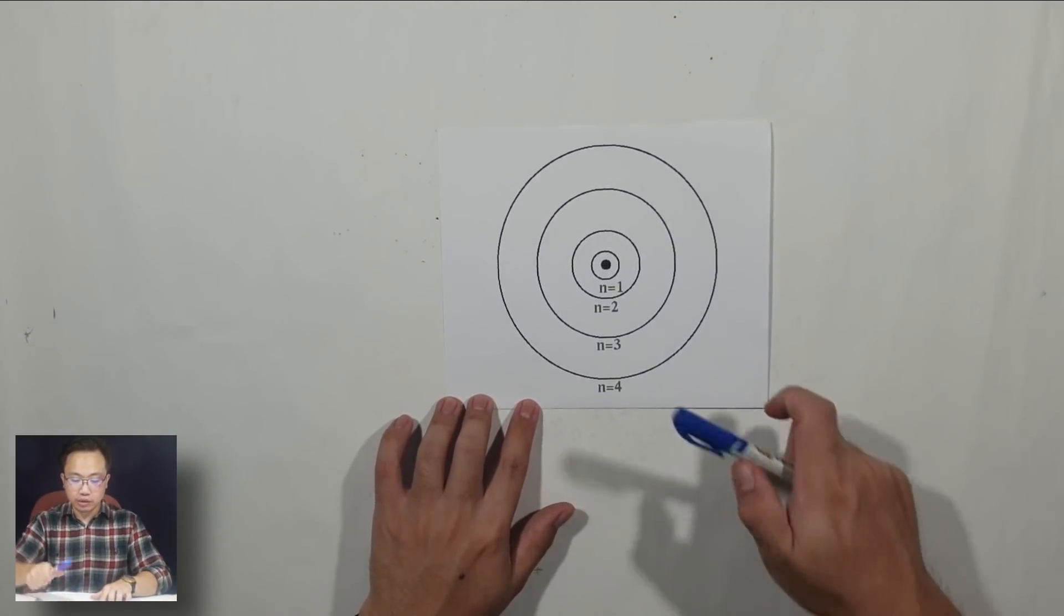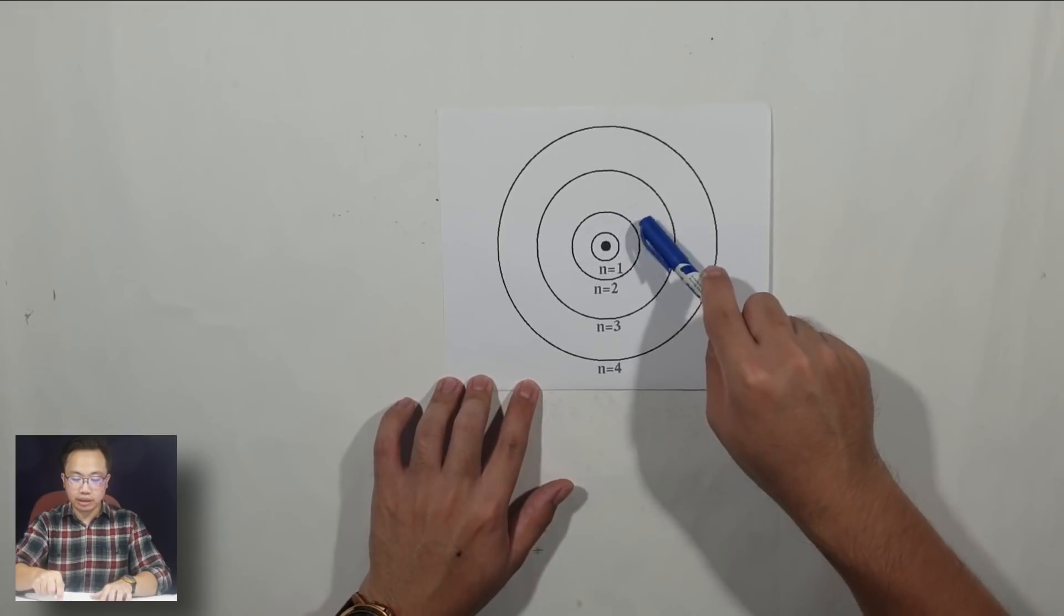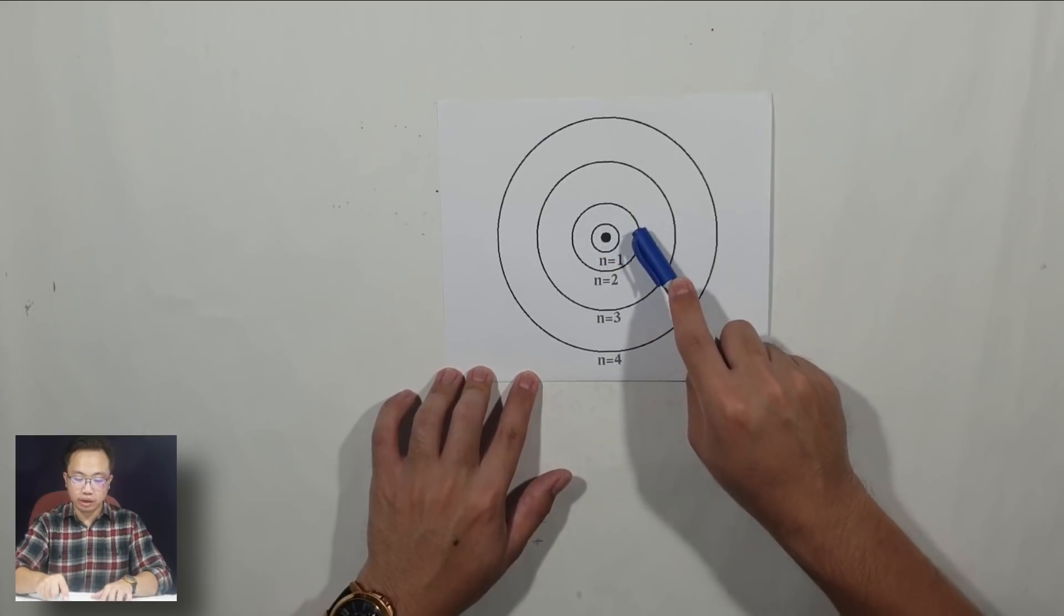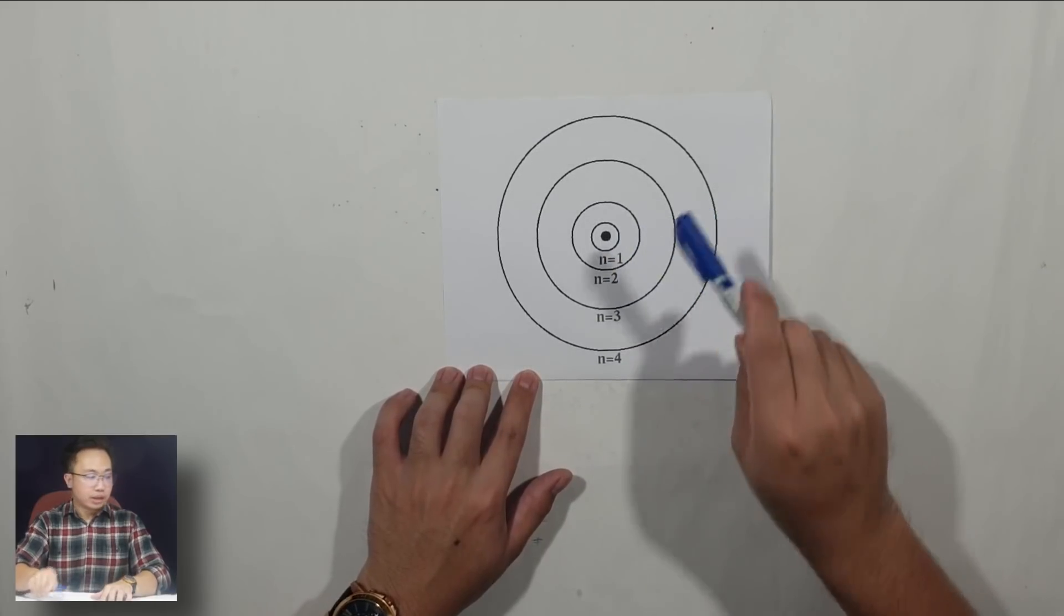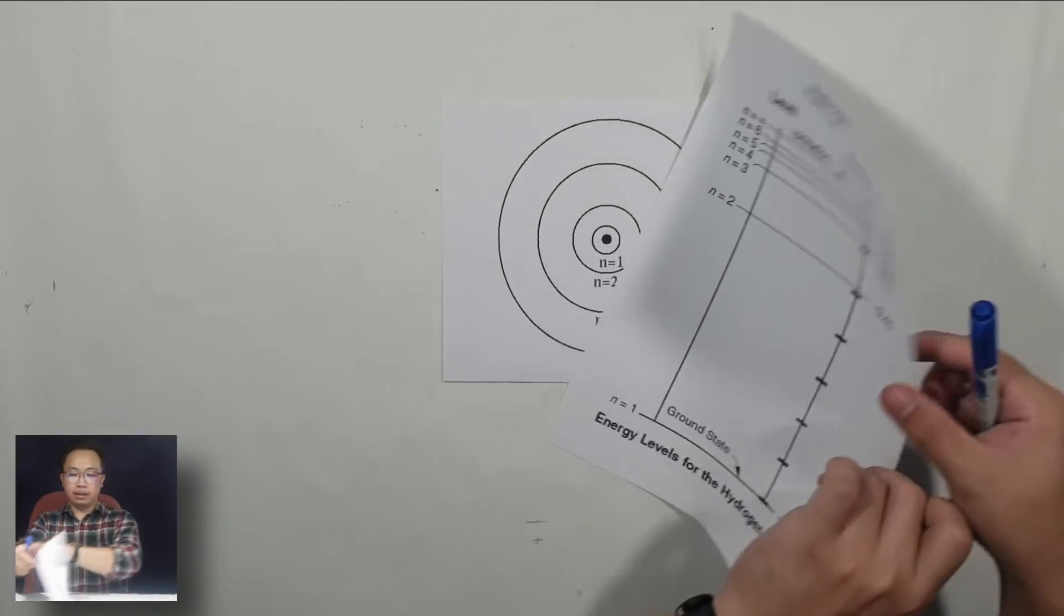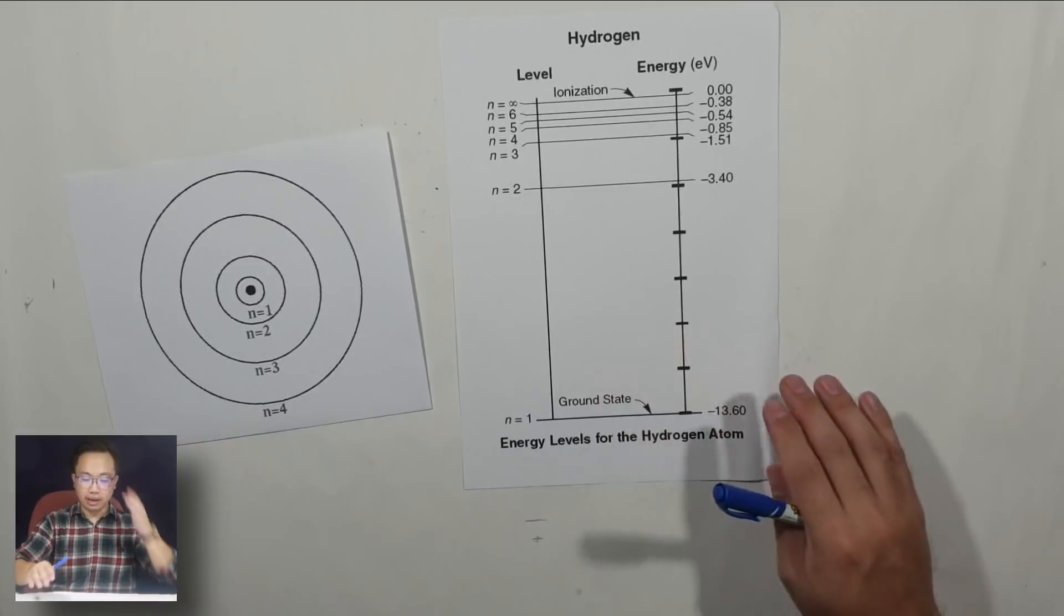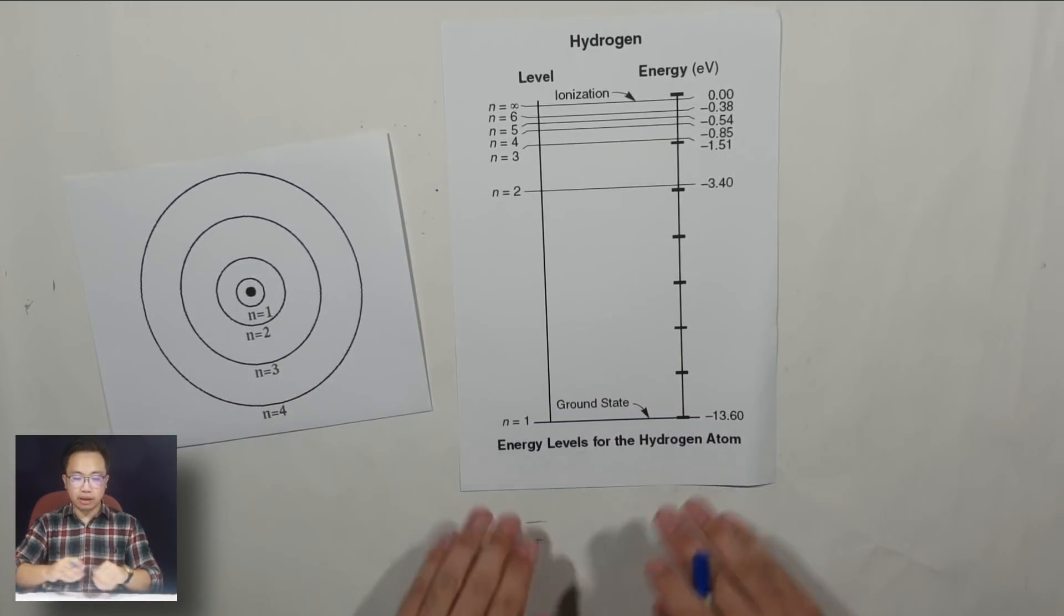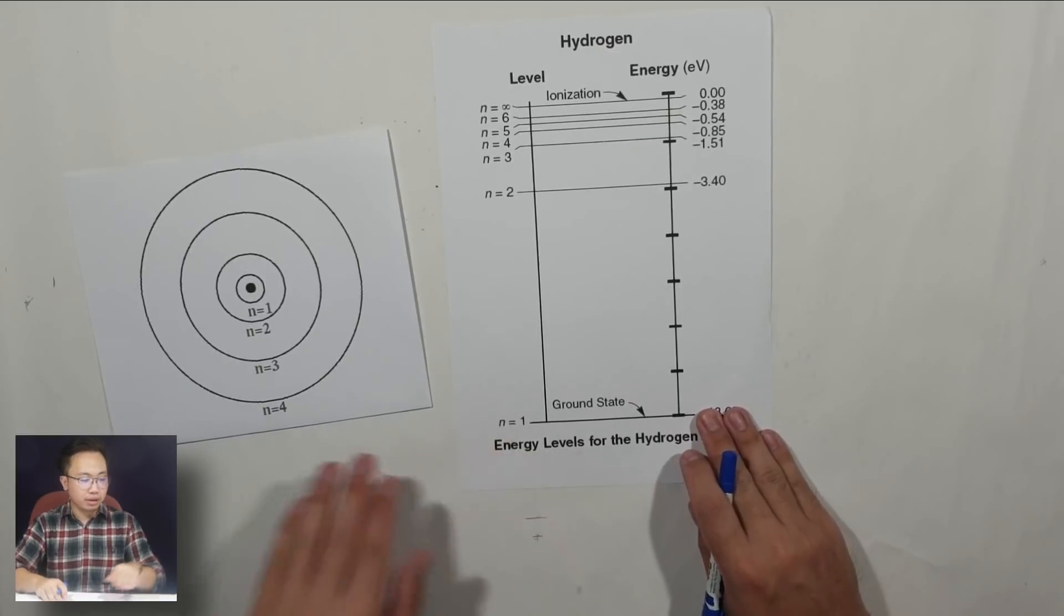Before we go to that, I'm going to refresh a little bit. You've seen this before. This is the energy level in the atom. You have your nucleus in the middle. You have N equals to 1, 2, 3, and 4. This representation can also be written like this. Your teacher or lecturer might emphasize using this one as well.